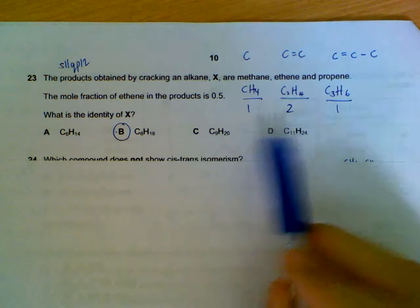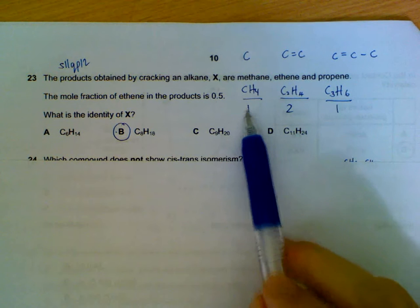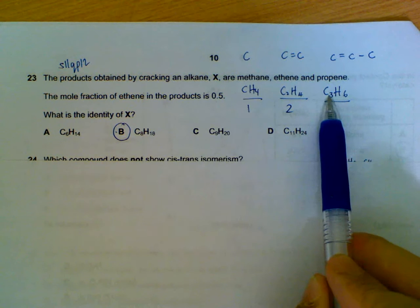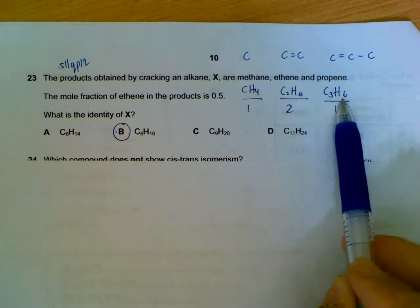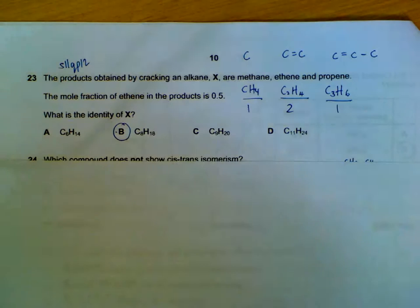Once I have these numbers, I'll check whether the number of carbons tally or not. So I will have a total of 1 plus 4 plus 3 carbons, total of 8. 4 plus 8 plus 6 hydrogen, total of 18. So 8 carbons, 18 hydrogen. So these numbers work out.